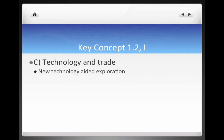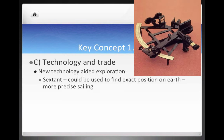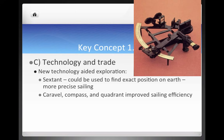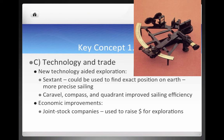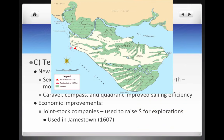Now let's talk about technology and trade. New technology enabled European exploration. The sextant could be used to find the exact position on Earth, leading to more precise sailing — basically the first GPS for ships. The Caravel was a ship introduced by the Portuguese that allowed for faster travel. The compass and quadrant also improved sailing efficiency. Economically, the Joint Stock Company — a forerunner of the modern corporation where people pooled money and shared profits and losses — was used in Jamestown, founded by the British in 1607.